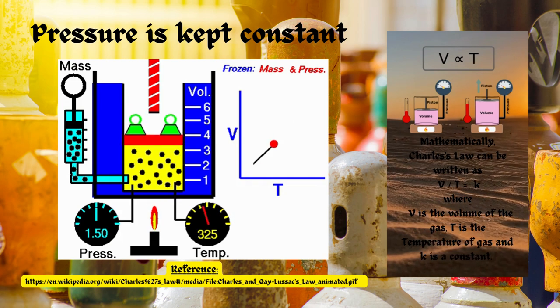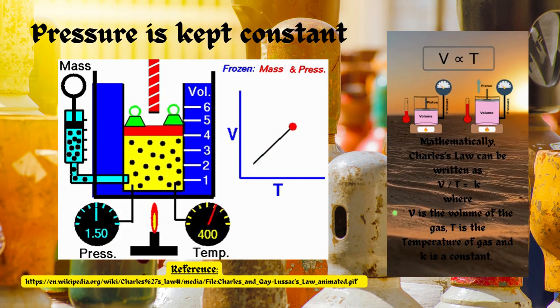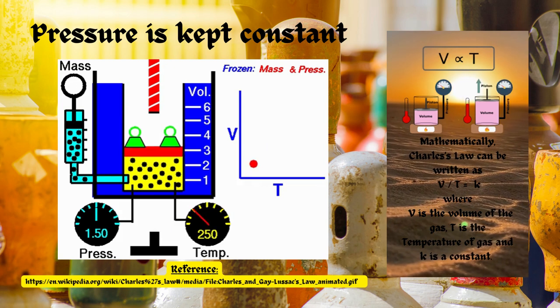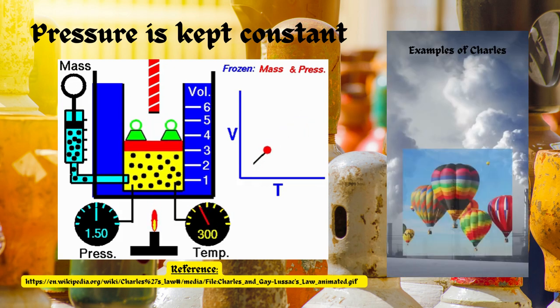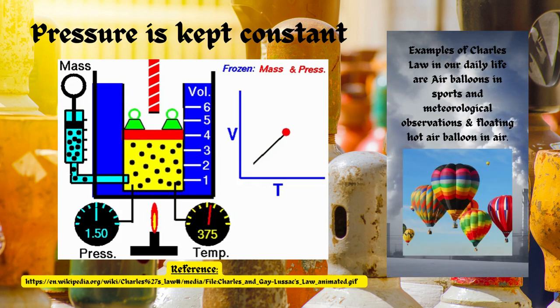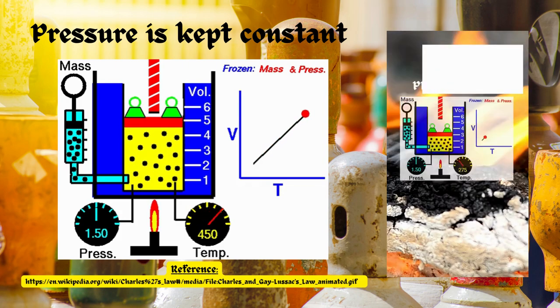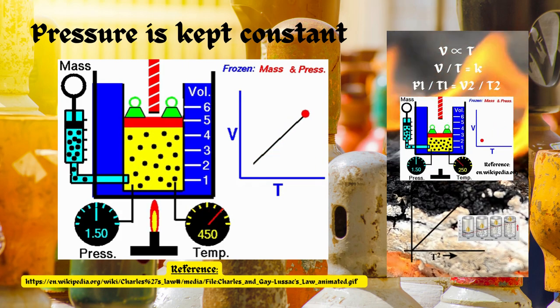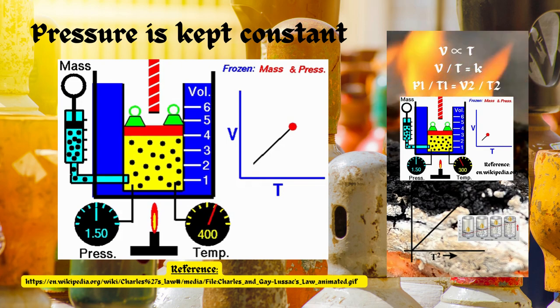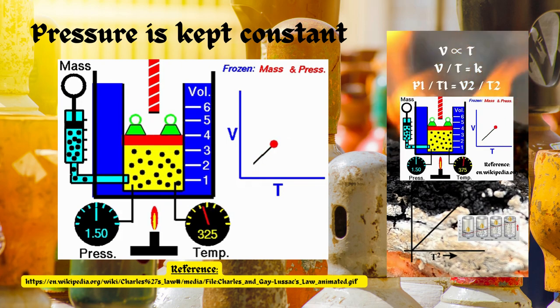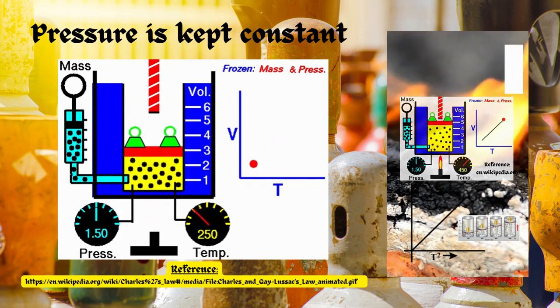Mathematically, V is directly proportional to T, where V is the volume of the gas, T is the temperature of gas, and K is a constant. Examples: air balloons in sports and meteorological observations and floating hot air balloon in air. V directly proportional T. V upon T equals K. V1 upon T1 equals V2 upon T2.